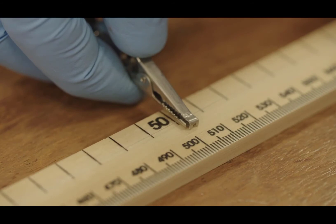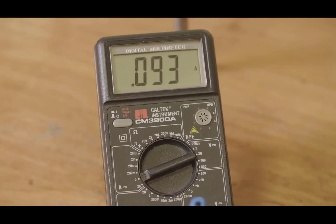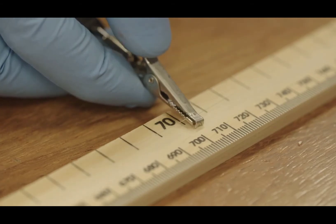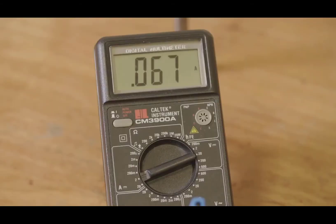The crocodile clip is moved again to the 50cm mark and the readings are noted. Data should be collected as the crocodile clip is moved along the wire in 20cm increments.